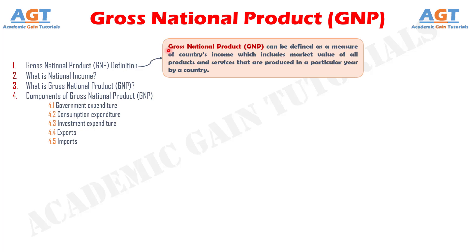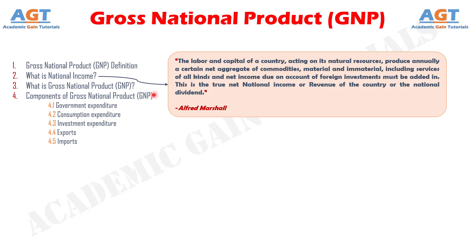Before starting with Gross National Product, let's know what is National Income. According to Alfred Marshall, the labor and capital of a country, acting on its natural resources, produce annually a certain net aggregate of commodities, material and dematerial, including services of all kinds, and net income due on account of foreign investments must be added in.